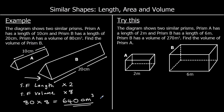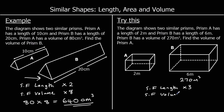We've got two similar prisms. Prism A, the small one, has a length of 2, and prism B has a length of 6. This time we're given prism B's volume: 270 meters cubed. Find the volume of prism A. The scale factor for length: to get from 2 to 6, multiply by 3. Scale factor for volume is scale factor cubed, so 3 cubed is 27. To go from the big shape to the little shape, we divide by 27. So 270 divided by 27 is 10 — the answer is 10 meters cubed.